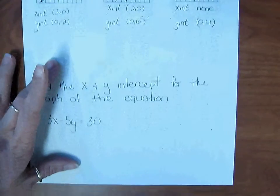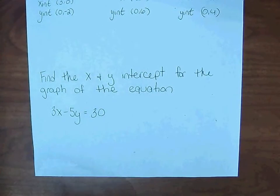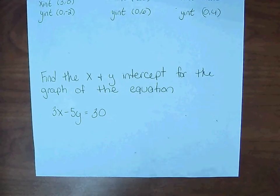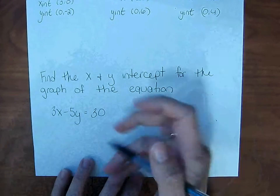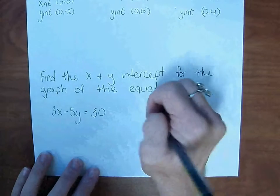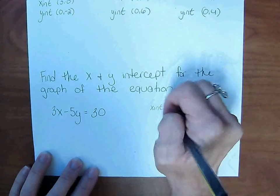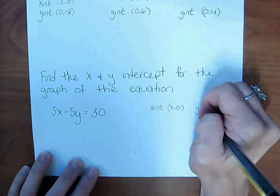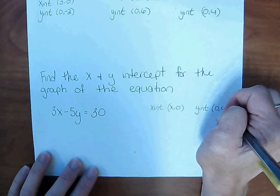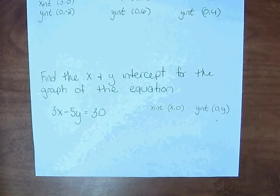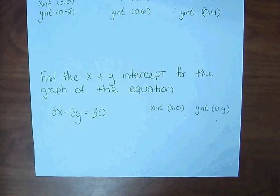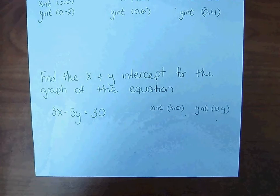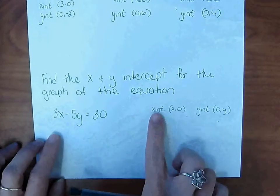And the last thing, find the x and y-intercept for the graph of the equation. So given an equation, we have to remember that the x-intercept is in the form x,0. And that the y-intercept is in the form 0,y. So to find the x and y-intercept, we plug in a 0 for that respective variable. So we'll start with the x-intercept.